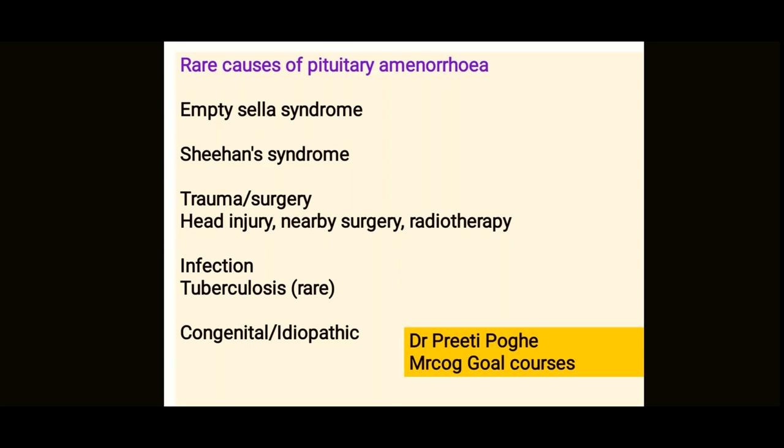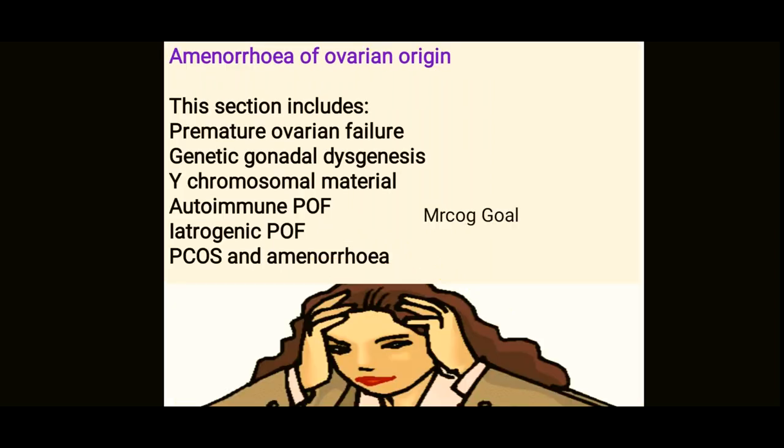Rare causes of pituitary amenorrhea include empty sella syndrome, Sheehan's syndrome, trauma, head injury, and infections like tuberculosis — these can be congenital or idiopathic. Amenorrhea of ovarian origin can be premature ovarian failure, dysgenesis, chromosomal causes, autoimmune or iatrogenic premature ovarian failure, or PCOS causing amenorrhea.